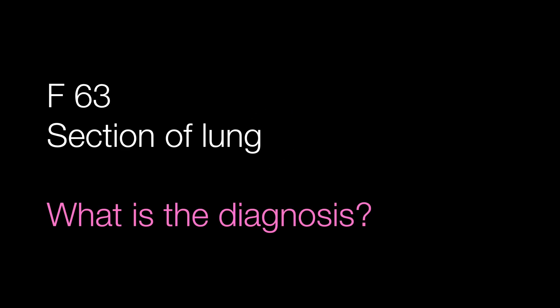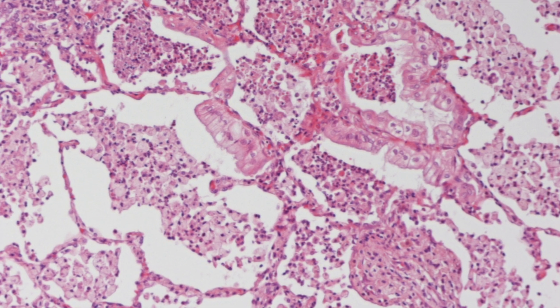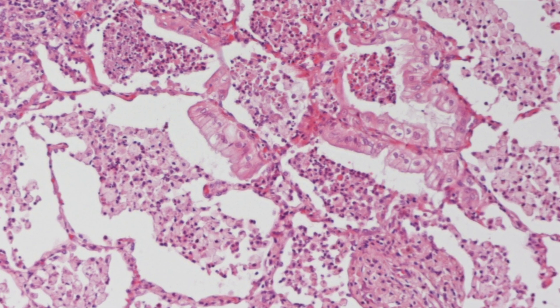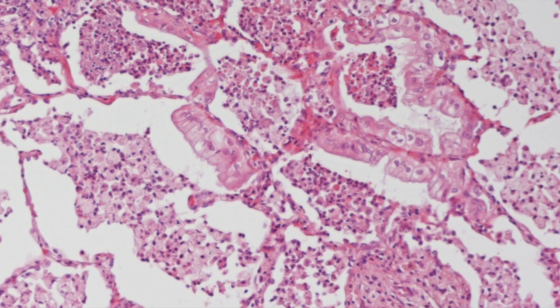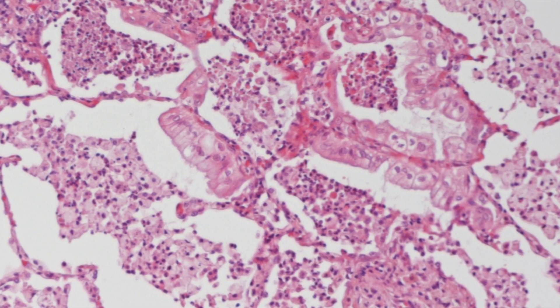This patient had a peripheral mass in the lung and this is a section of it. What is the diagnosis? The key to making the diagnosis in this case is by looking at the cells lining the alveolar walls.